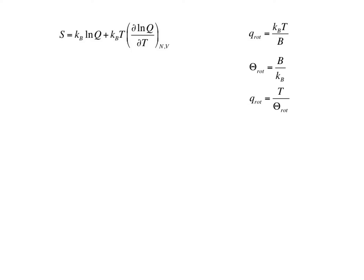It's customary to define a rotational temperature, theta rotations, as the rotational constant divided by the Boltzmann constant. Using this definition, the rotational partition function simplifies to the temperature divided by the rotational temperature.